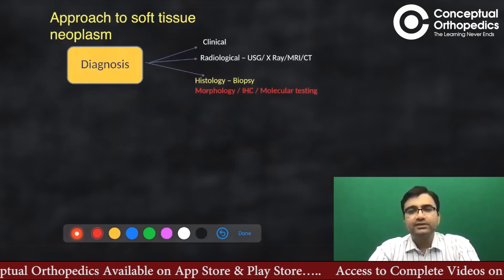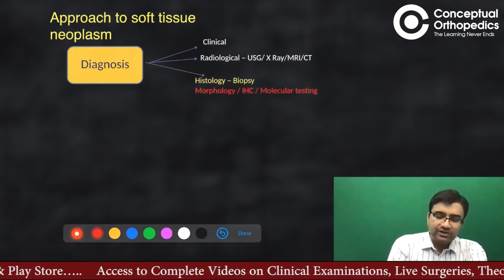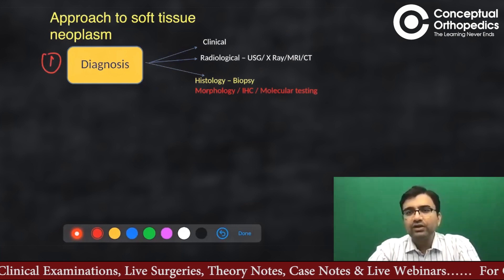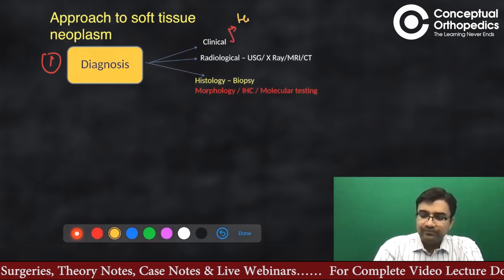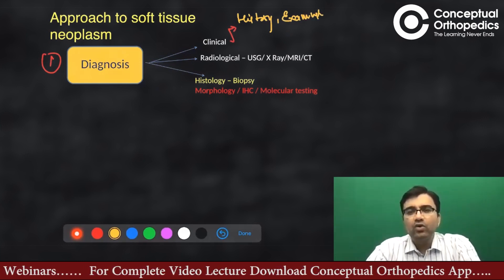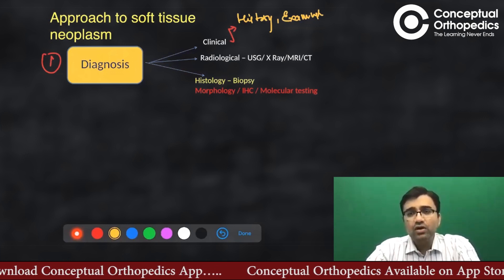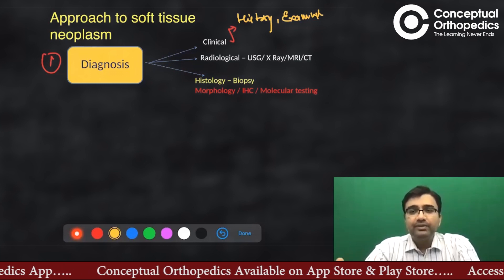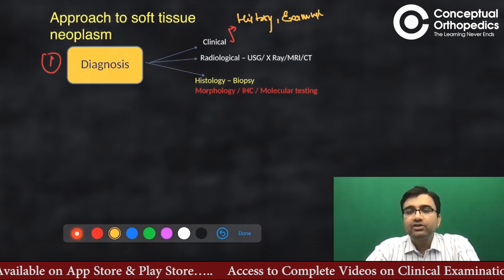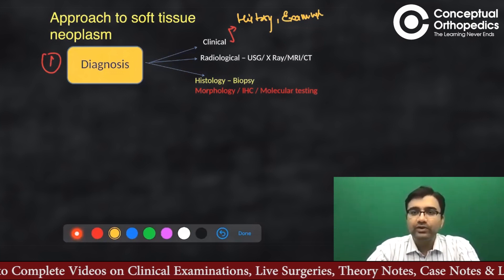The basics of approaching any lesion start with forming a diagnosis. Your diagnosis is made on three parameters: clinical workup, proper history, and examination. History will give you an idea of how long the swelling has been there and how quickly it is growing. A five-year history hints at benign etiology. A tumor that was stable and has suddenly started growing may be a case of malignant transformation. History of swelling appearing after injury near a joint could suggest myositis ossificans.